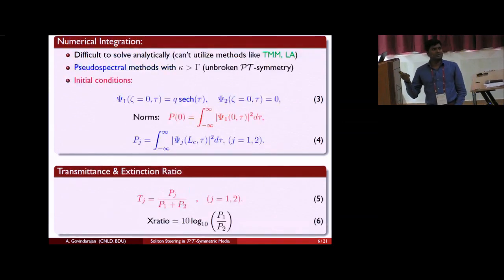In general, this system cannot be solved because they are non-integrable. We cannot use any methods like inverse scattering method, and we cannot also apply the Lagrangian formalism because these systems lie in between dissipative and conservative systems. So obviously, one has to use numerical methods. Here, we use the pseudo-spectral methods. And also, we consider that the system works at unbroken PT-symmetry. Because we know very well that at singularity, the light stops and at broken PT-symmetry, the soliton pulses experience instability. So throughout the study, we restrict that the system works at unbroken PT-symmetry. So the initial conditions have been taken in the form, and the normalized energy is being calculated with this formula. The two important parameters, transmission as well as the extinction ratio, can be calculated using these relations.